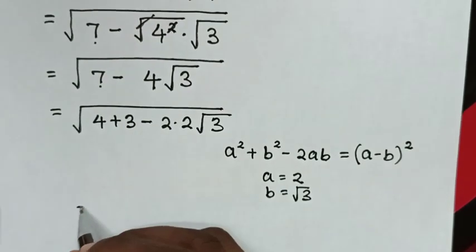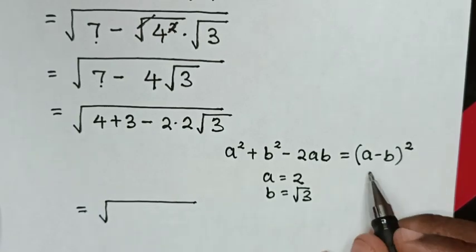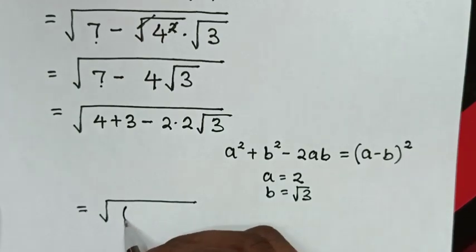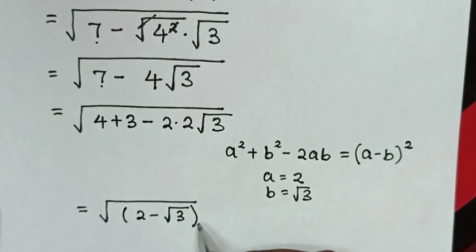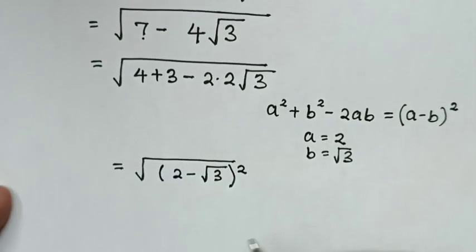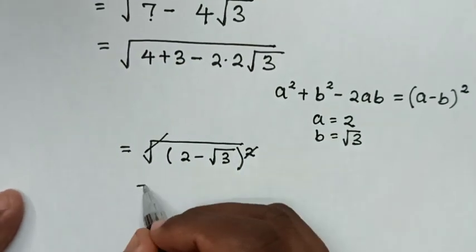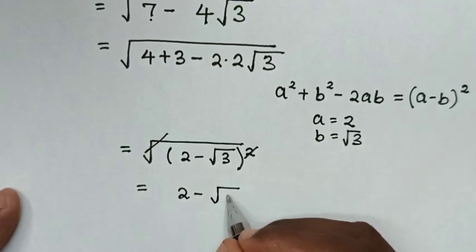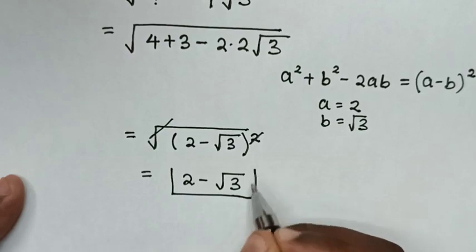In the next step, it will be equal to 2 minus square root of 3, bracket squared. Then in the next step, this square root cancels with this square, so it will be equal to 2 minus square root of 3. Therefore, this is our final answer.